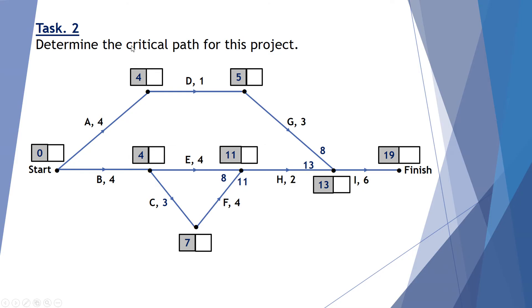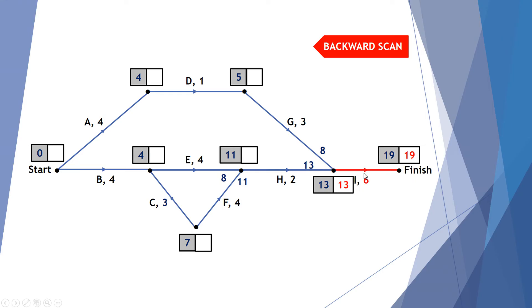Task two. Let's determine the critical path for this project. Now in order to do this we need to complete a backward scan. So starting at 19 which was our minimum time, working backwards, 19 take six gives me 13. 13 take 2 gives me 11. 13 take 3 gives me 10. 11 take 4 gives me 7. 10 take 1 gives me 9. 7 take 3 gives me 4. 11 take 4 gives me 7.